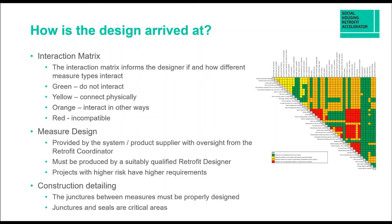Within the design process, the interaction matrix — shown on the right and included in the PAS2035 document — outlines how individual elements you might apply to a property correlate with each other, allowing the designer to see which measures are complementary. Green in that table indicates measures that don't interact and can be installed easily. Yellow indicates measures that connect physically, so you need to be mindful of how they'll interact. Orange are elements that might interact in other ways, and red are products that are entirely incompatible and shouldn't be installed together.